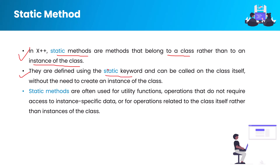Moving to the second point: static methods are defined using the static keyword. If you want to create a static method, you have to use the static keyword. You can also use the static keyword before a variable name to create a static field. A static method can be called on the class itself without the need to create an object or instance of the class.